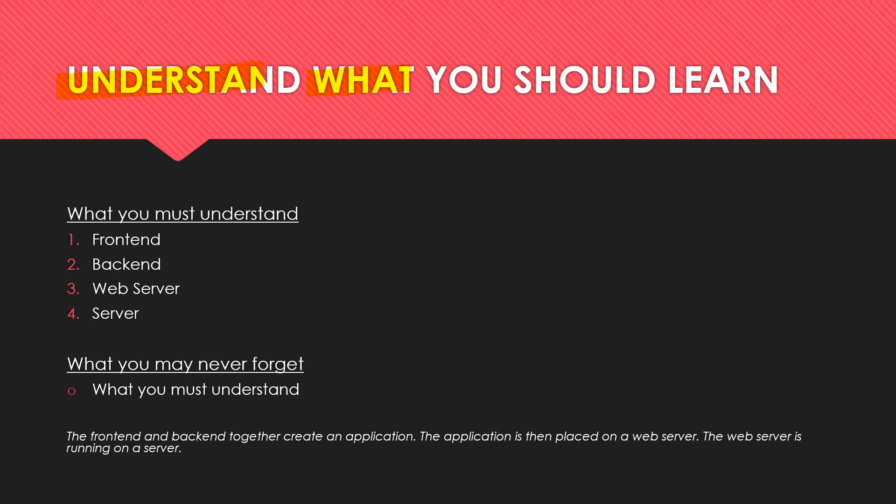We will start by talking about the front end where the user interface lives, then proceed to the back end and discuss programming languages, frameworks, databases and database architecture. The front end and back end together create an application which consists of a user interface, logic and routing written in a programming language, and data storage in a database. The application is then placed on a web server. The web server is running on a server — you could say that the web server and server also belong to the back end, but to make this guide understandable we will split the key areas into four parts.